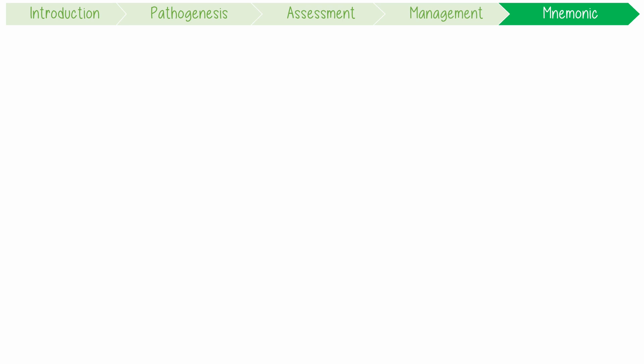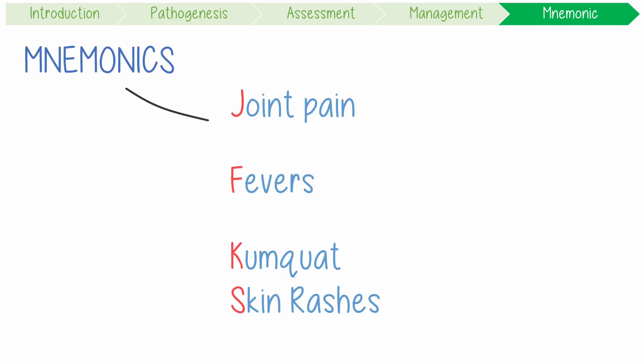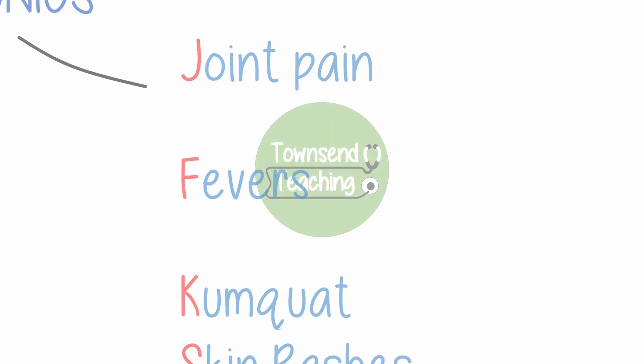To summarise with the mnemonic: JFK's signs and symptoms — joint, fevers, and kumquat skin rash — which can all be managed supportively. Thanks for watching Townsend Teachings.